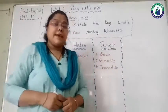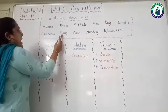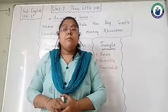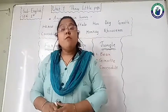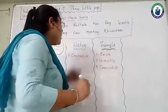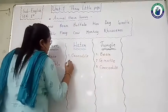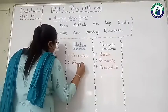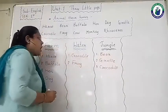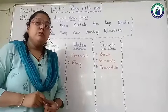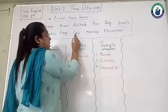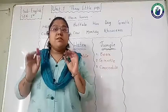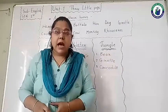Next — F-R-O-G, frog. Frog lives in water, so frog is a water animal. Write frog, F-R-O-G, in the water column. Now next — C-O-W, cow. Cow can also be seen near our house, so cow is a farm animal.